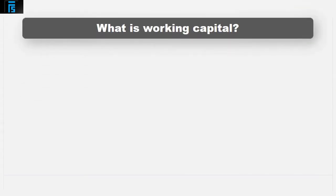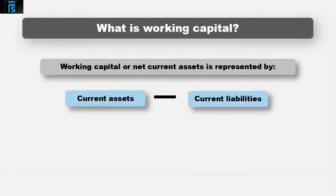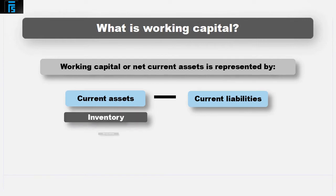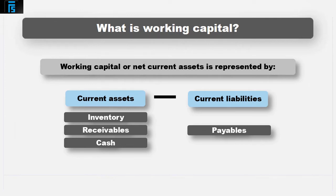What is working capital? Working capital, or net current assets, is represented by current assets minus current liabilities. In their simplest form, current assets will include the inventory that is sold, the receivables due from customers in respect of sales made on credit, and cash. Current liabilities will include payables owed to suppliers in respect of purchases made on credit.